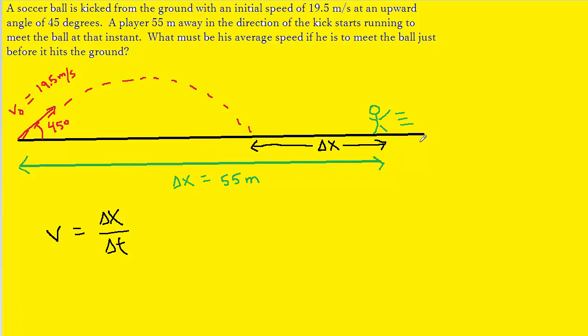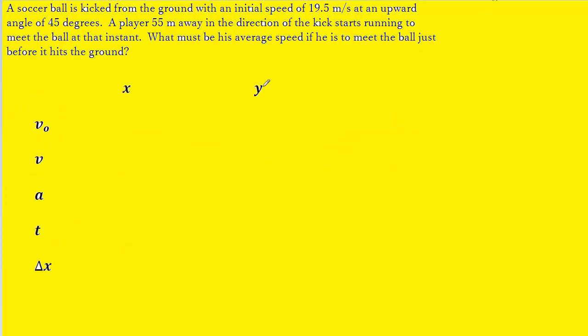Now to actually begin approaching the question, it's going to be ideal to use a projectile motion table. In this table, we have the five variables of interest. We have the initial velocity, final velocity, acceleration, time, and displacement. And then we have the two directions in which the object is moving, the x direction and the y direction. What we want to do is fill in as much of this information as is possible.